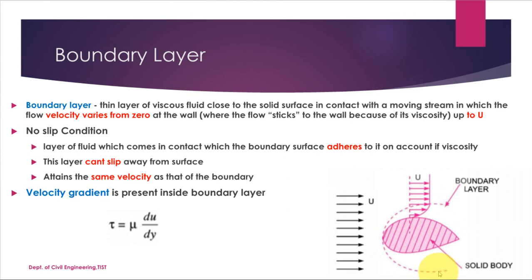This layer very close to the solid body boundary is known as the boundary layer, and the study of flow in that layer is known as boundary layer theory. The boundary layer is a thin layer of viscous fluid close to the solid surface in contact with a moving stream, in which the flow velocity varies from zero at the wall up to U.